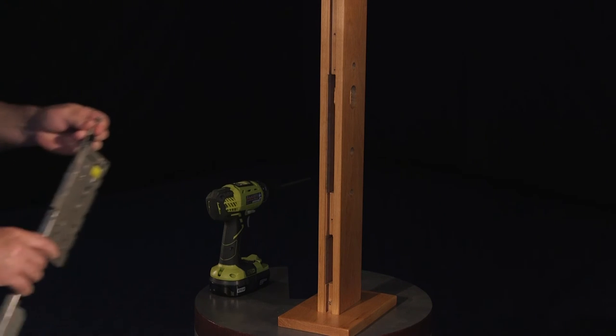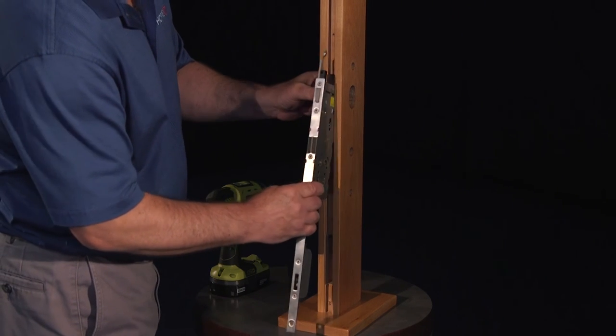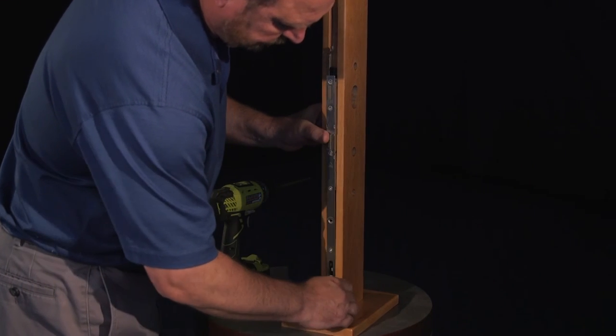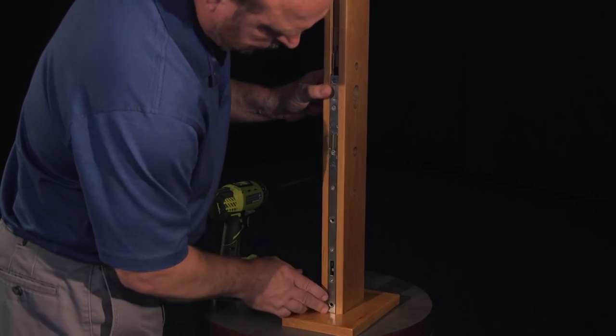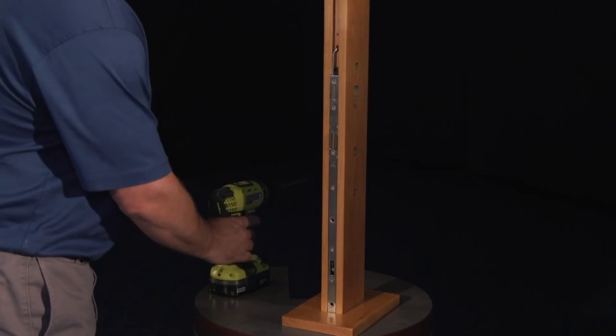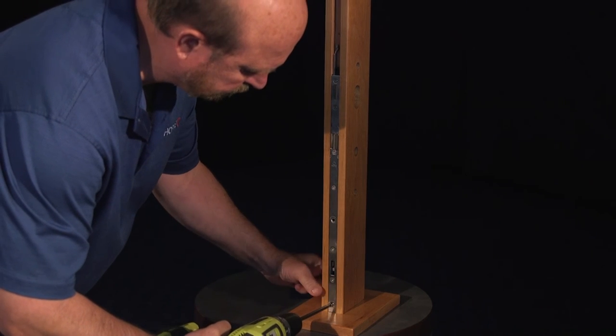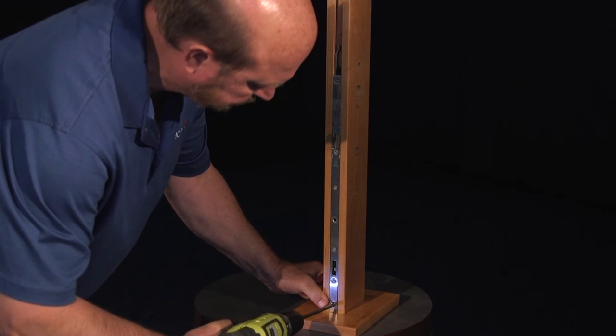Installing the Huppa HLS-7 series multipoint lock is basically reversing the procedures just covered. Starting with the lock case and lower extension, gently insert them into the prepared door ensuring that the faceplate fully seats in the preparation and is flush with the door edge.